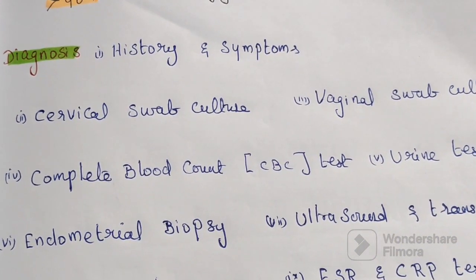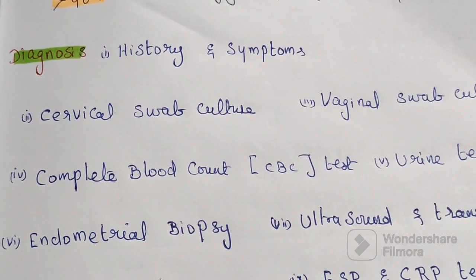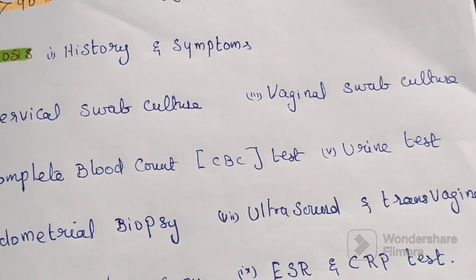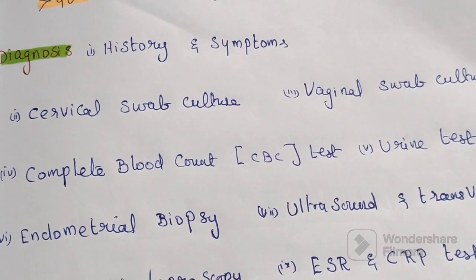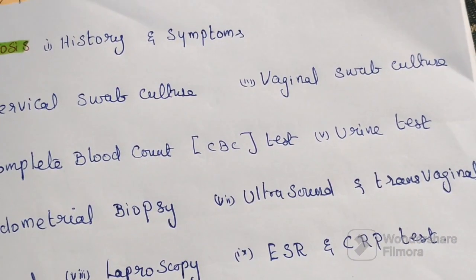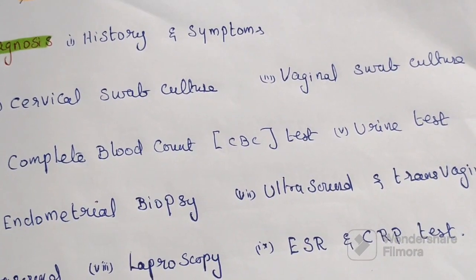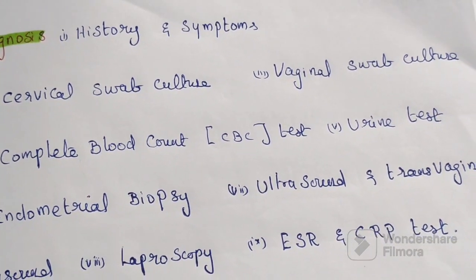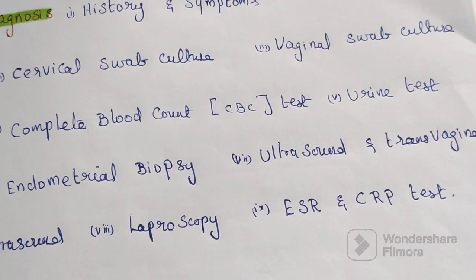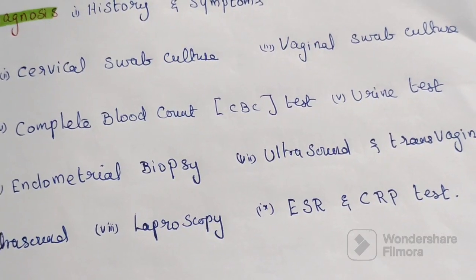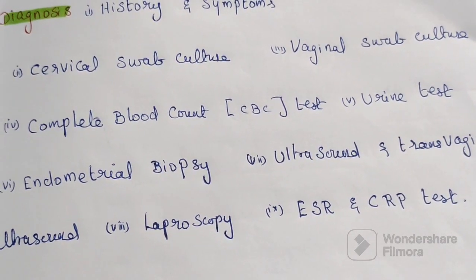For diagnosis, we can ask the history and symptoms of the patient. Tests include cervical swab culture, vaginal swab culture, complete blood count, urine test, endometrial biopsy, ultrasound, transvaginal ultrasound, laparoscopy, erythrocyte sedimentation rate, and CRP.